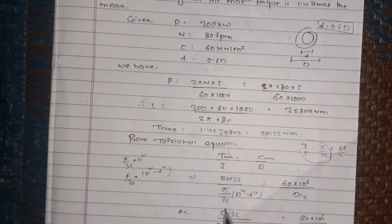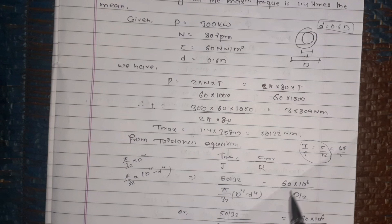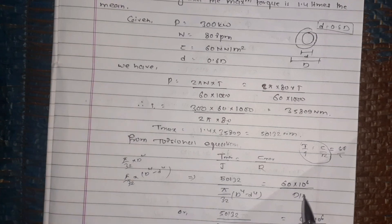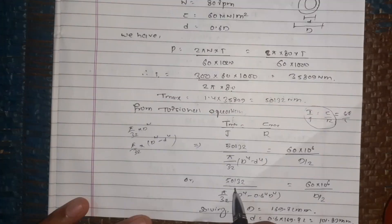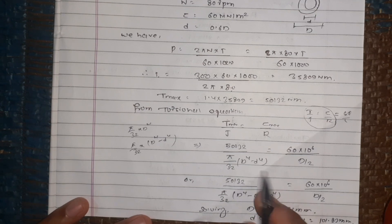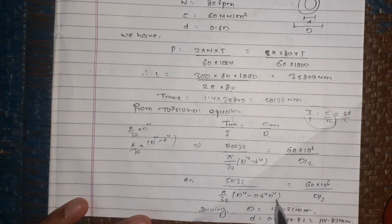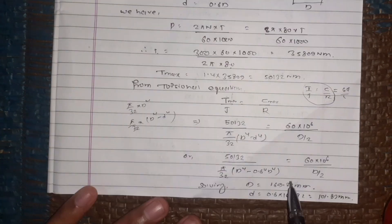So pi by 32 upon pi by 32 D power 4 minus d power 4 equals tau max, 60 into 10 to power 6, times R, which is diameter by 2, external diameter by 2 radius. So pi by 32 upon pi by 32 into D power 4 minus small d which is 0.6 times capital D, so 0.6 power 4 capital D power 4 equals 60 into 10 to power 6 upon D by 2.